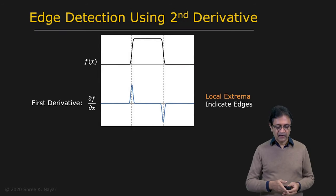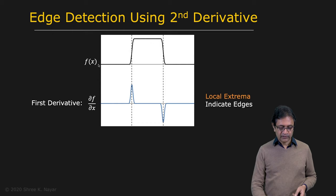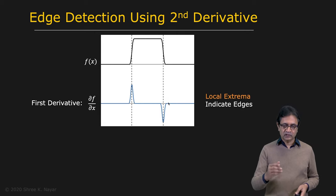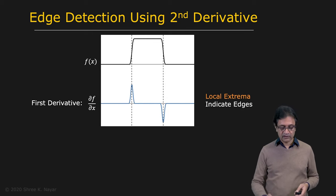Now we're going to look at how we can use the second derivative of an image to detect edges, and that brings us to the Laplacian operator. Let's start with our 1D signal f of x. We know what the first derivative of that signal looks like — we already discussed that with the gradient operator. So this is the first derivative of f with respect to x. You get a peak here and a flipped peak here. Now the question is: what is the second derivative of f with respect to x? What would that look like?